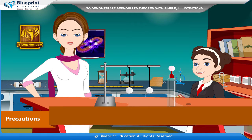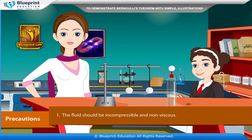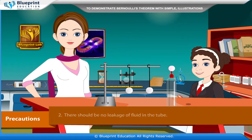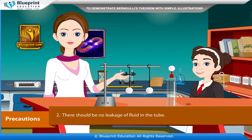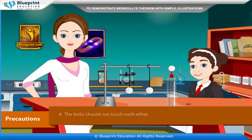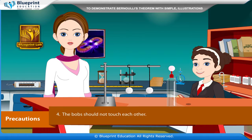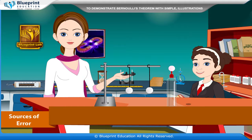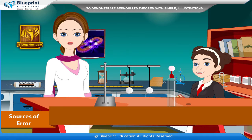Precautions: the following points need to be kept in mind. The fluid should be incompressible and non-viscous. There should be no leakage of fluid in the tube. The space between the two bobs should be small. The bobs should not touch each other. The bobs should be at the same height.